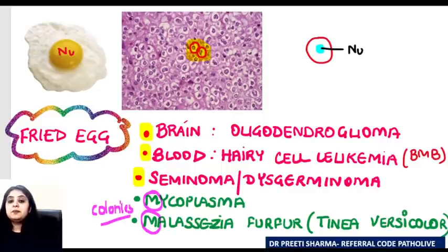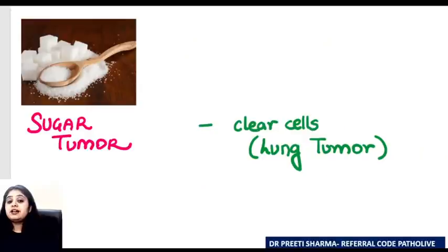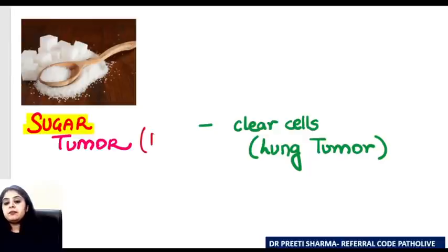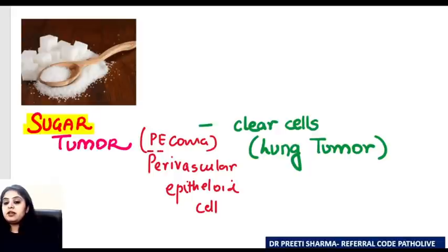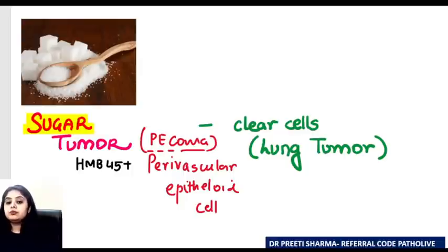Having completed the breakfast eggs, let's also consider sugar. In pathology, there's a tumor referred to as a sugar tumor, and it belongs to the family of PEComas — perivascular epithelioid cell tumors. Something very peculiar about them is that in immunohistochemistry they tend to be HMB-45 positive. PEComas and sugar tumors are HMB-45 positive and under the microscope they show clear cells. That is the sugar tumor of the lung.